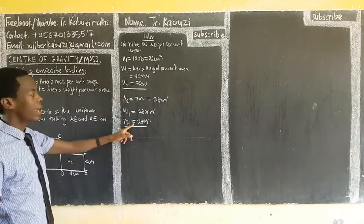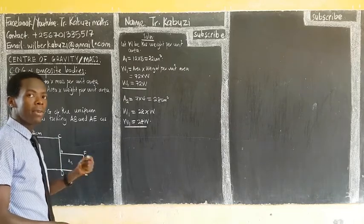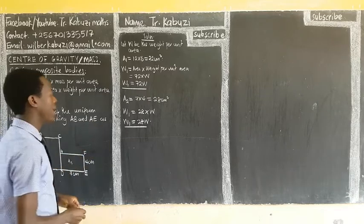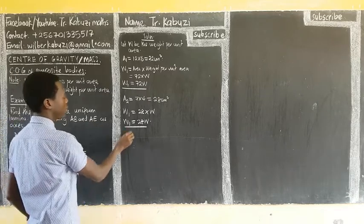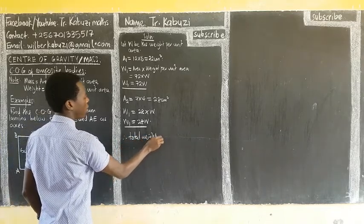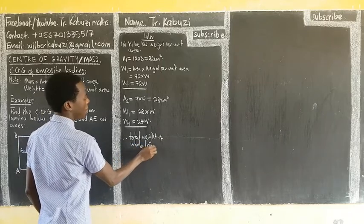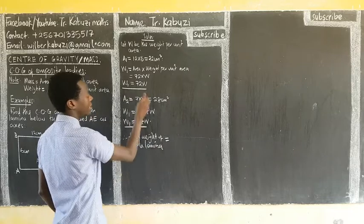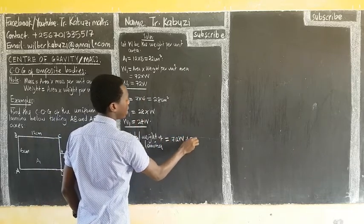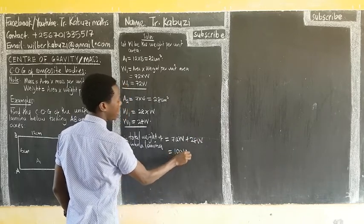Now since the first section is weighing 72W and the second is weighing 28W, we can get the total weight of the whole lamina. The total weight of the whole lamina is 72W plus 28W, which gives us 100W.